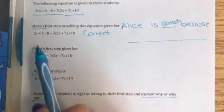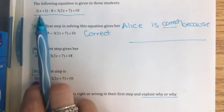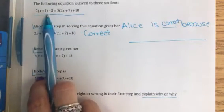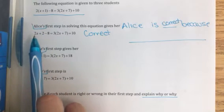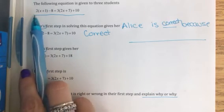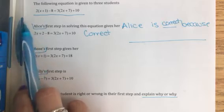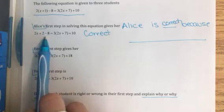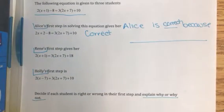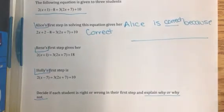So Alice is correct because that's going to talk about the why. And we could fill in here that Alice is correct because in her first step she chose to distribute the 2 and simplify the first set of parentheses. She did that correctly because 2 times x is 2x and 2 times 1 is 2.